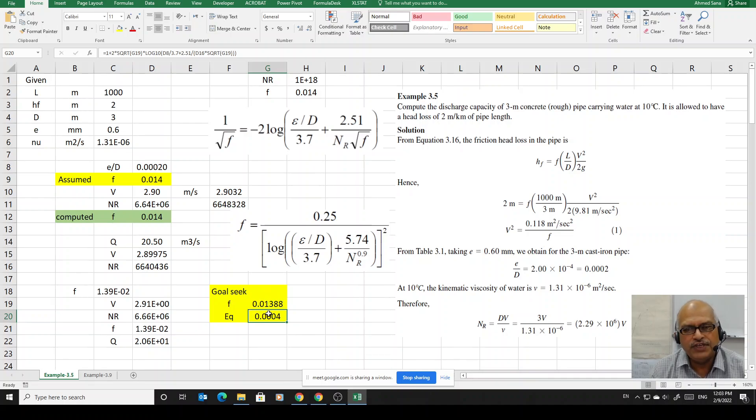In the beginning, we assume a value of f. Let me just change it. I will just change it to, for example, 0.1. That would be probably some of the higher values of f according to the Moody's chart. Once it is there, the equation is there.